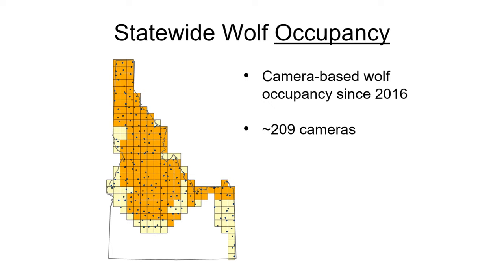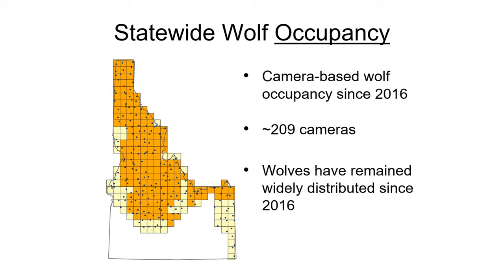This grid helps us understand the yearly distribution of wolves, including which parts of the state are regularly occupied by wolves — colored here in dark orange — and which parts are only rarely occupied by wolves — colored here in yellow. The results of this occupancy monitoring have shown that wolves have remained widely distributed in Idaho with no major changes in occupancy since 2016.